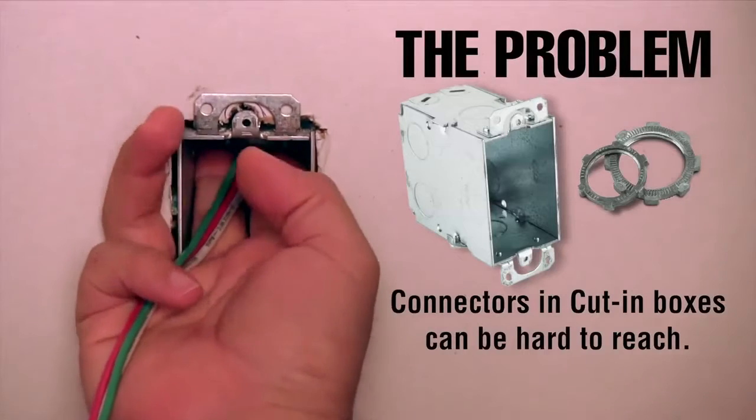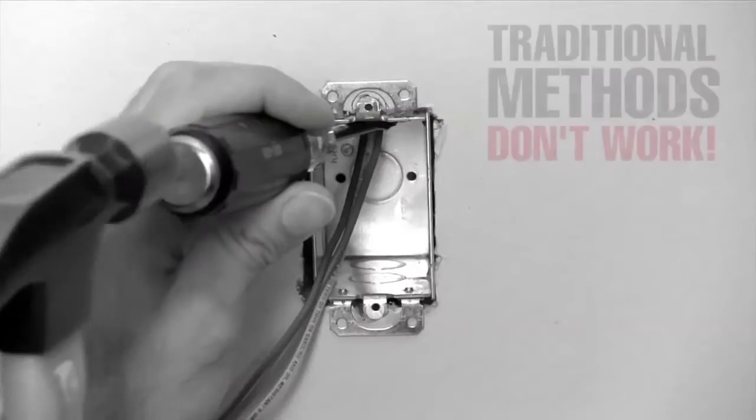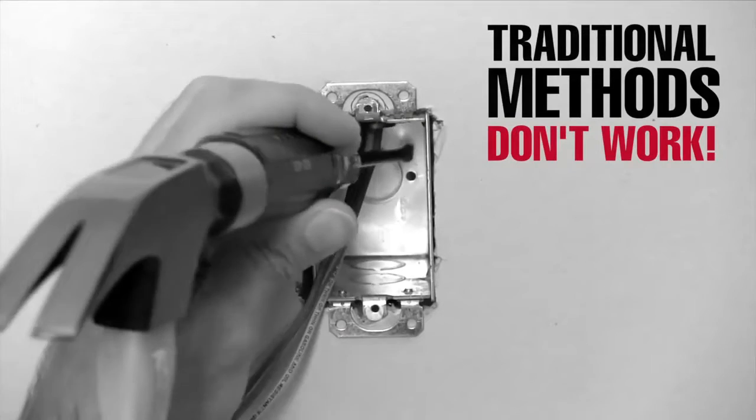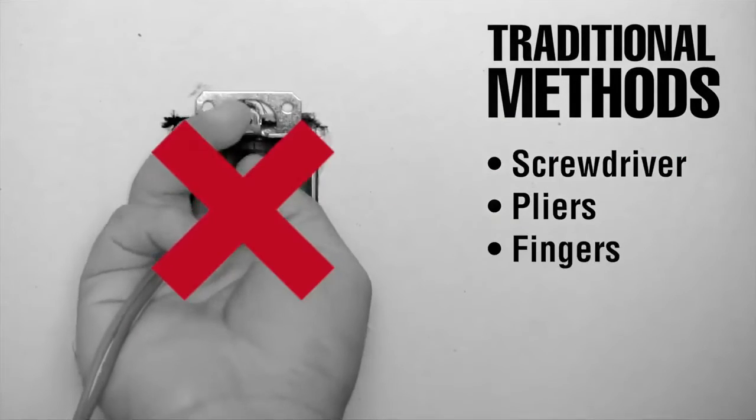Cut-in boxes are hard to reach and usually too small for most hands to easily attach conduit connectors. Traditional methods of attaching lock nuts like a screwdriver, pliers, or fingers don't work.